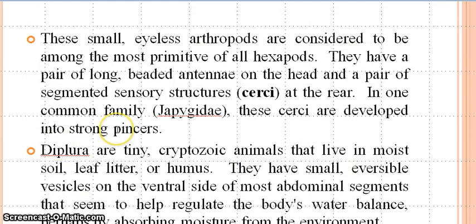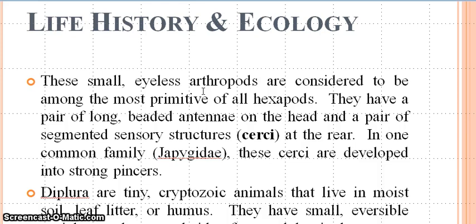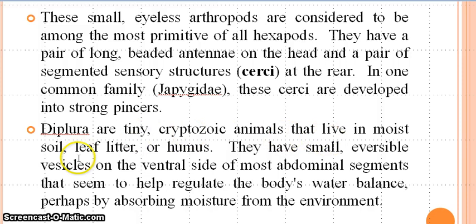In life history and ecology, these are small, eyeless insects — they don't have compound eyes or ocelli — and they are considered as the most primitive of all hexapods. Insects have six legs, so they are termed hexapods. They have a pair of long, beaded antennae on the head and a pair of segmented sensory structures, cerci, at the rear. In one common family, Japygidae, these cerci are developed into pincers and are involved in boring. Diplura are tiny cryptozoic animals that live in moist soil, leaf litter, or humus.